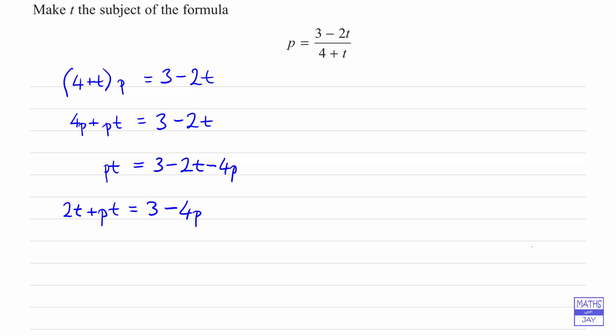And now we need to factorise the left hand side because remember we only want to have the t in one place. So we've got t being multiplied by 2 and plus p there.